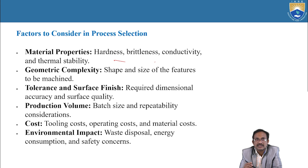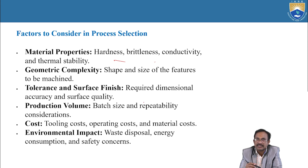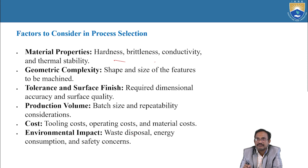Geometric complexity: shape and size of features to be machined. Tolerance and surface finish: required dimensional accuracy and surface quality. Production volume: batch size and repeatability considerations. Cost: tooling costs, operating costs, and material costs. Environmental impact: waste disposal, energy consumption, and safety concerns.